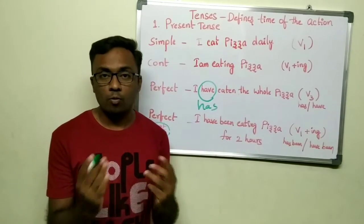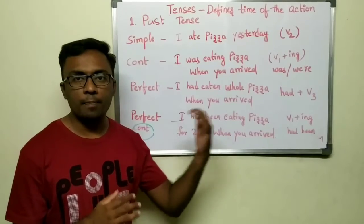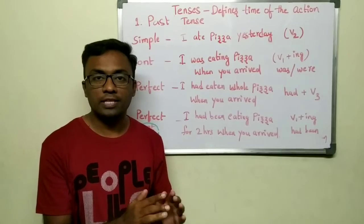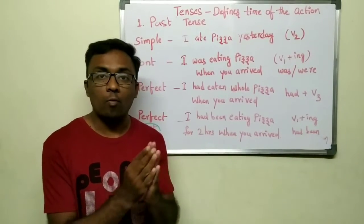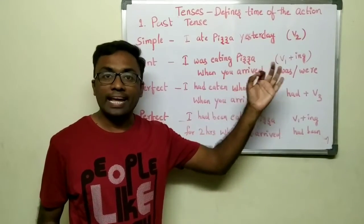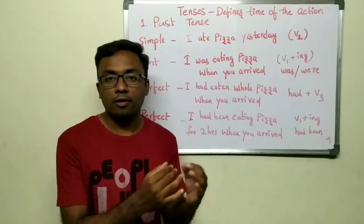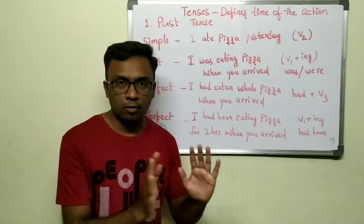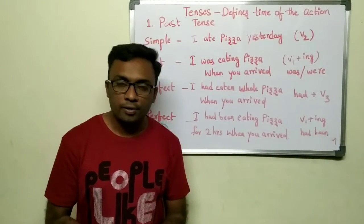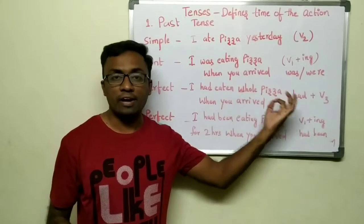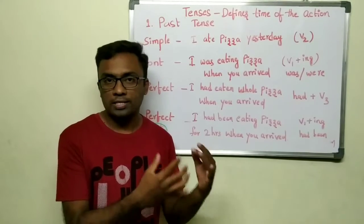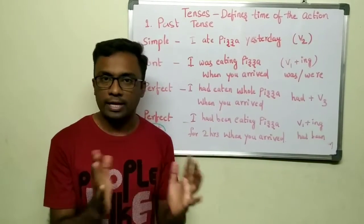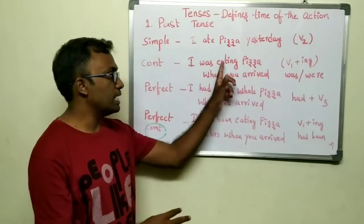Now let's move on to past tense. Simple past tense: 'I ate pizza yesterday.' Simple past tense is an action which has been completed. The verb form used is V2 — eat, ate, eaten, so 'ate' is V2. Similarly, go-went-gone. Now past continuous tense: 'I was eating pizza when you arrived.' 'Was' indicates past tense, and the continuous action uses V1 plus ING.